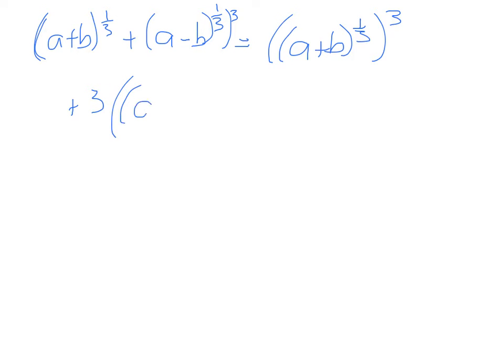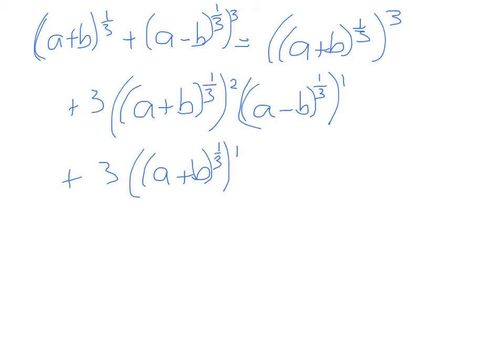Okay, so a plus b to the power of one-third. This is going to equal, well, we're going to have a plus b to the power of one-third cubed, plus 3 times the first term, a plus b, to the one-third squared, times a minus b, plus 3 times the first term to the power of 1. Whoops, I've done something, I've missed something here. That's to the power of one-third. Okay, so that's how that should be. a minus b to the one-third squared, plus a minus b to the one-third cubed.